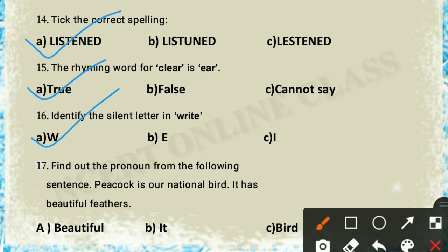Question 17: find the pronoun from the following sentence — 'Peacock is our national bird. It has beautiful feathers.' In the first sentence, 'peacock' is the noun. In place of it, 'it' is used, so 'it' is the pronoun here.